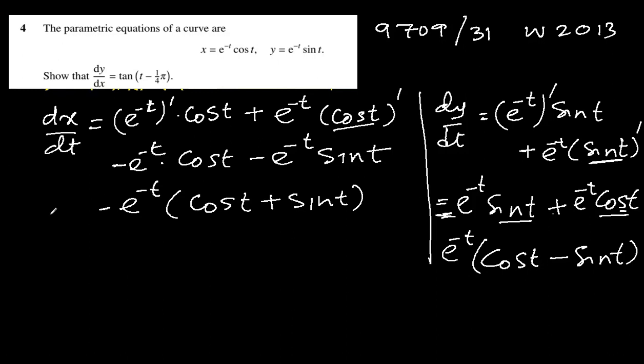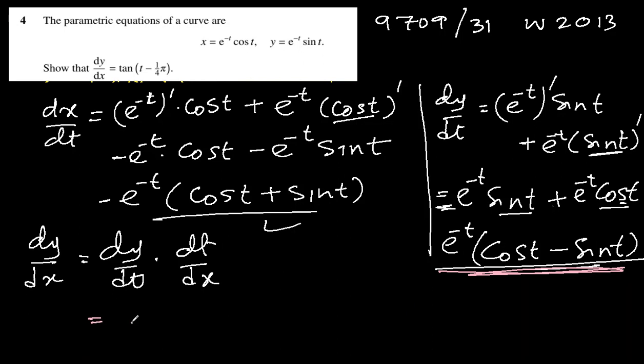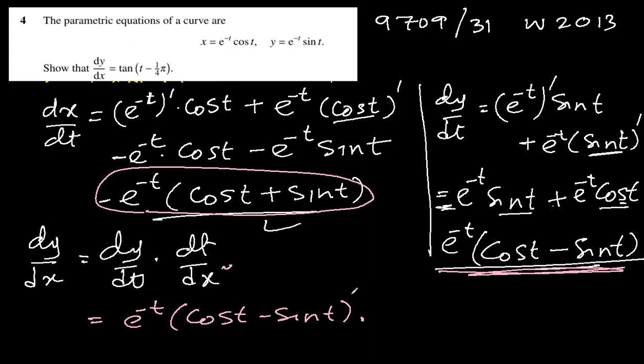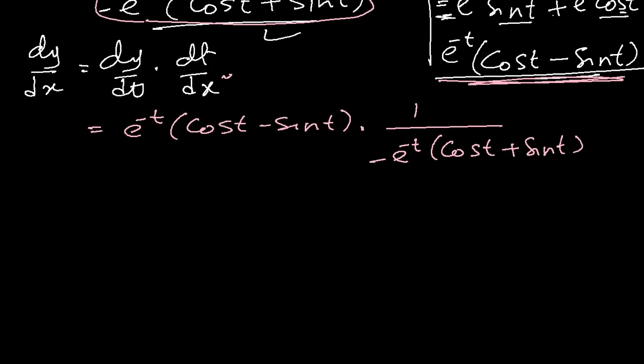Now they are asking us to show that dy/dx is this. So dy/dx is equal to dy/dt multiplied by dt/dx. dy/dt, what did we get? This here: e^(-t)(cos(t) - sin(t)), multiplied by reciprocal of dx/dt. It's dt/dx, that's what we want. So we'll reciprocate what we had here. It will be 1 over -e^(-t)(cos(t) + sin(t)).